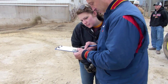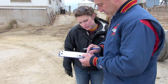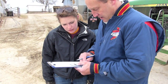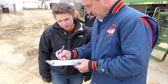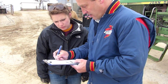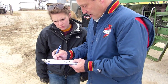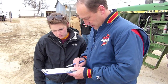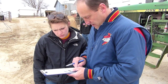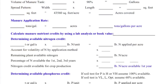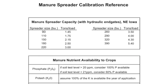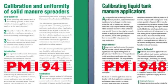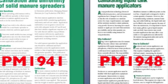The best way to determine the nutrient rates applied on your farm is to collect a representative manure sample and send it to a certified lab for analysis. The Iowa Department of Agriculture maintains a list of certified labs, which you can check on the Iowa Manure Management Action Group website.